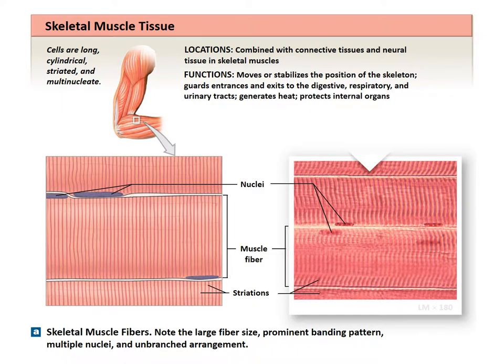Here we can see the arrangement of skeletal muscle tissue with its striated appearance, which comes from different sarcomeres placed together — we'll get to what a sarcomere is — and the different nuclei found on each of the muscle fibers.